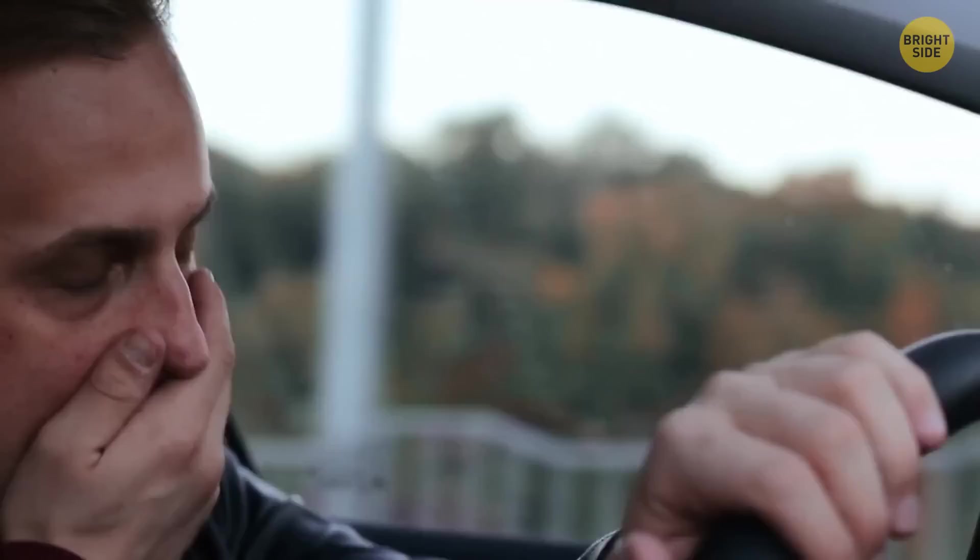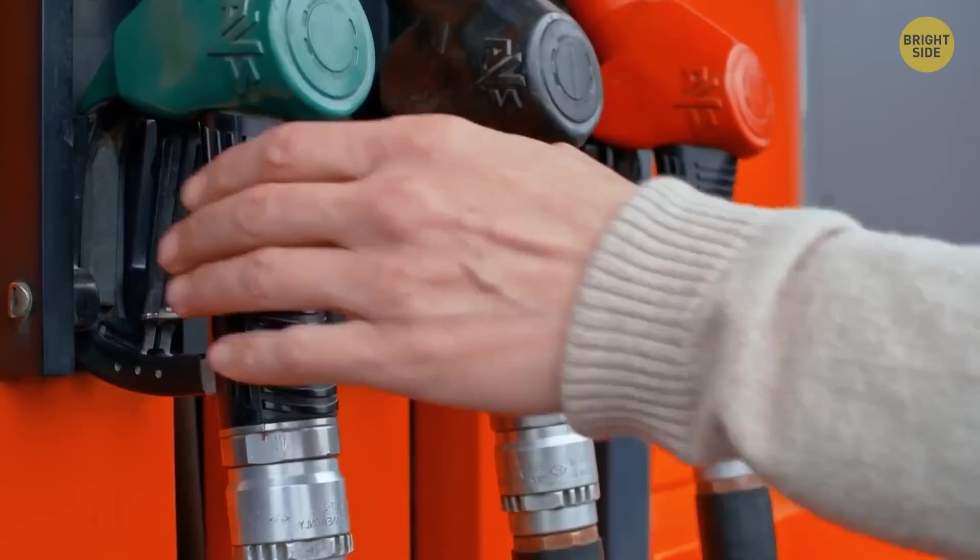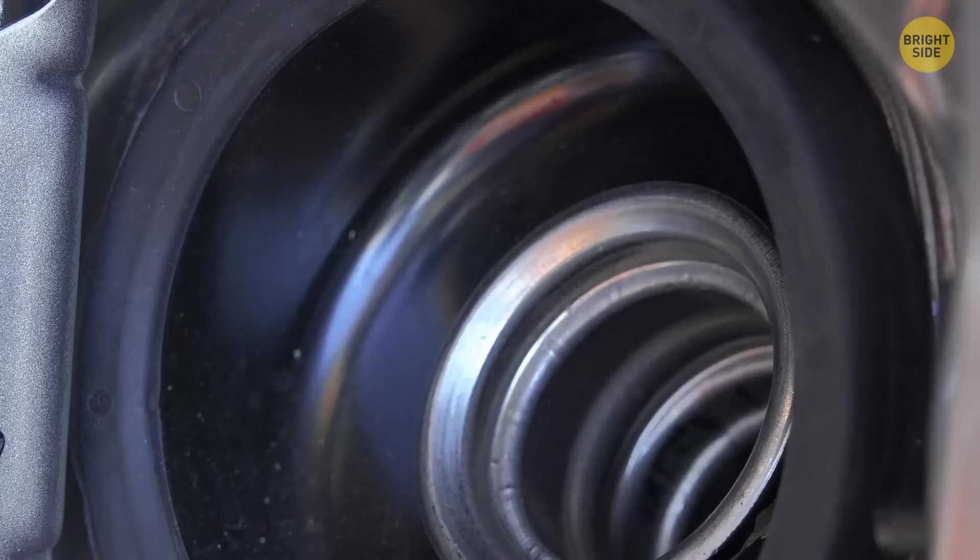There are magnetic locks on fuel hoses at gas stations. They come in handy if someone drives away with the gas nozzle still attached to their car. In this case, the lock detaches the hose automatically. Oh, that's embarrassing.